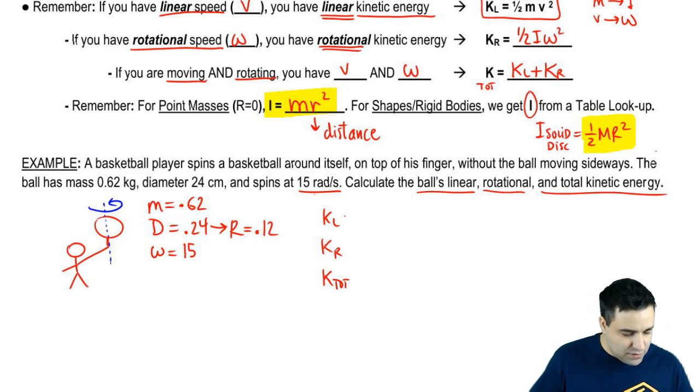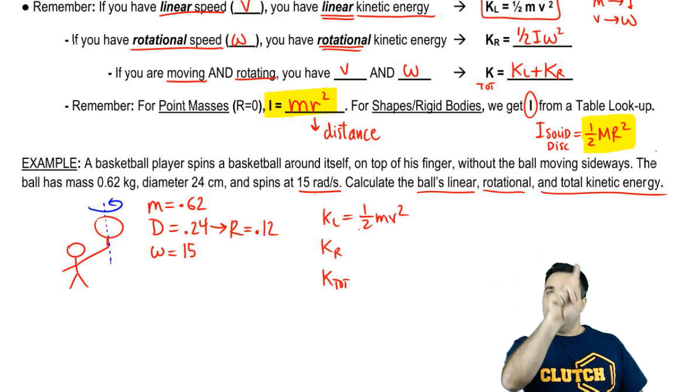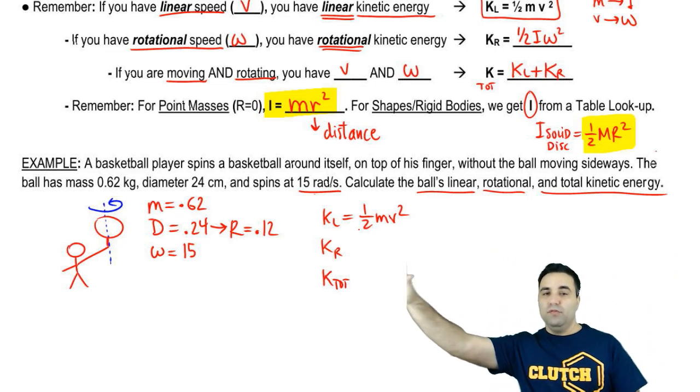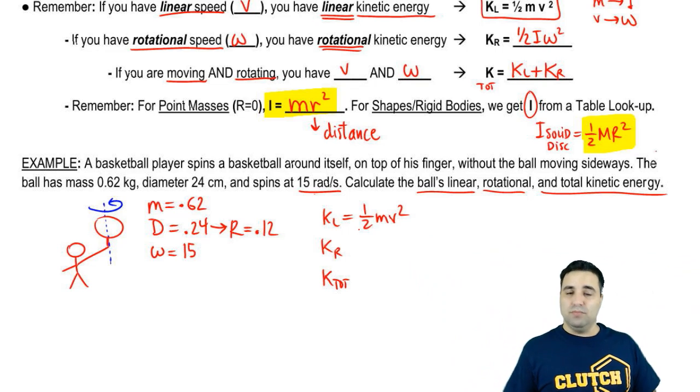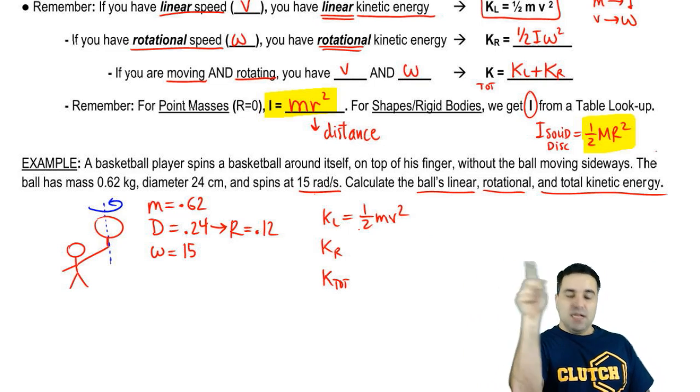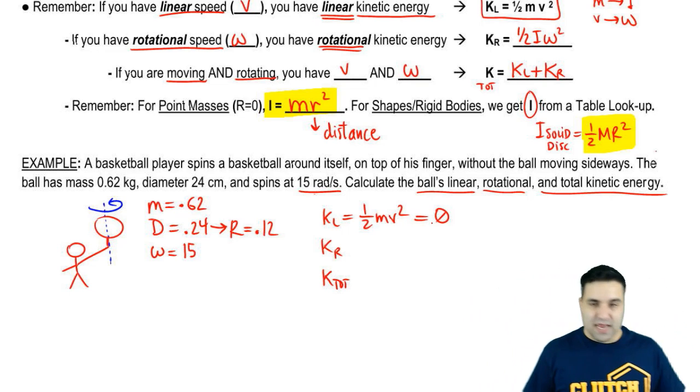Now we're going to plug into the equation here. Kinetic energy is half mv squared. And this ball has no kinetic energy. No linear kinetic energy, I should say. And that's because it spins in place. It's rotating, but it's not actually moving. It has rotational motion, but it doesn't have linear motion. It doesn't have translational motion. It just stays in place, spinning around itself.